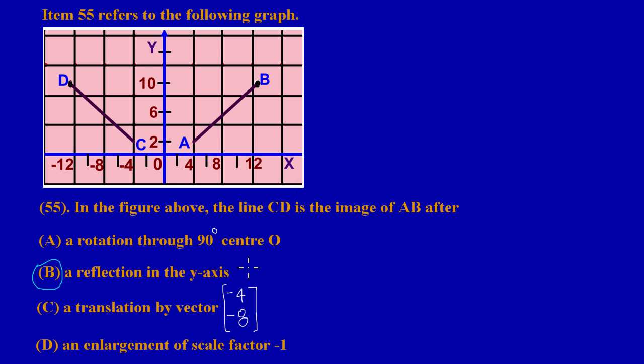However, let's look at the idea behind it. Why is it a reflection in the y-axis? When given a transformation, there are certain characteristics of each transformation that you ought to use to identify. The reason I can tell you it's a reflection in the y-axis is because under a reflection, both object point and its corresponding image point are the same distance away from the mirror line.